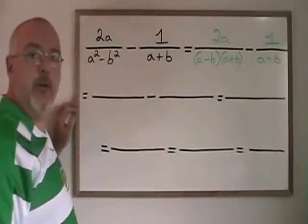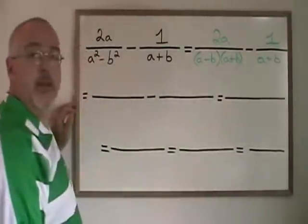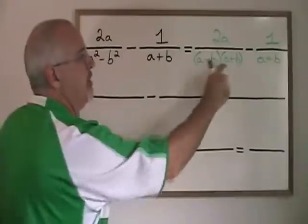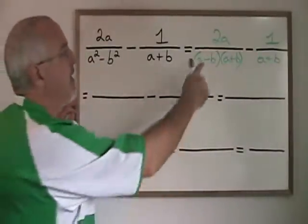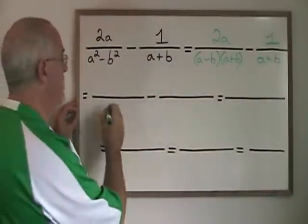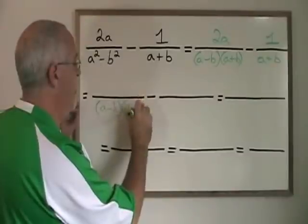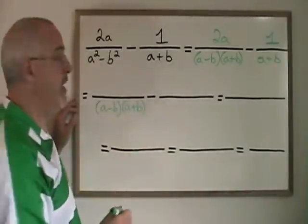Now we have to find our common denominator. Again, a plus b is a factor of this bigger expression a minus b times a plus b. The bigger expression a minus b times a plus b will be our common denominator this time. I write it in the denominators of both fractions.